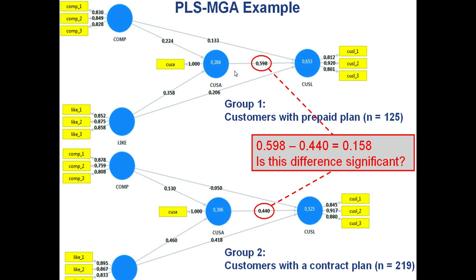We estimate the PLS path model for the first group. The result for the relationship between customer satisfaction and customer loyalty is 0.598. Then we estimate the PLS path model for the second group, where the relationship is 0.440. The difference of the two group-specific PLS path model estimations is 0.158. The question is: is this difference significant?